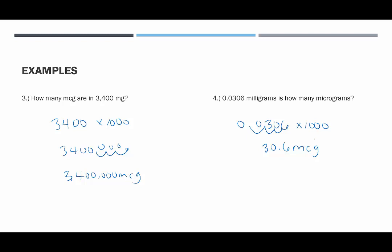These have been examples of converting from milligrams into micrograms by multiplying by 1,000, or by moving the decimal point three places to the right, and paying very special attention to the notation for milligrams versus micrograms. Thank you for stopping by.